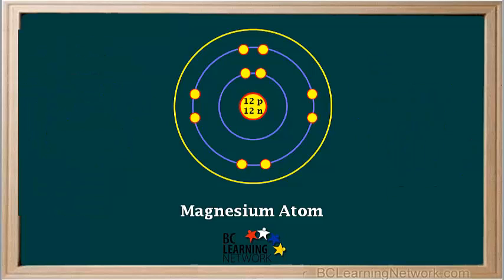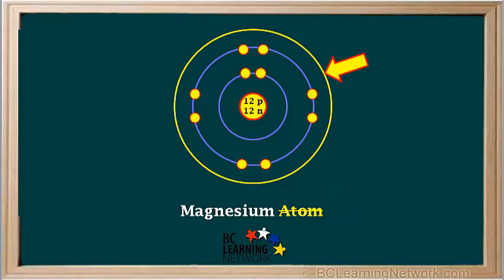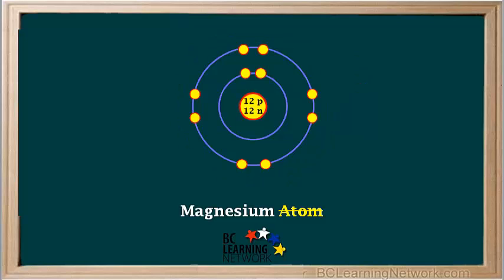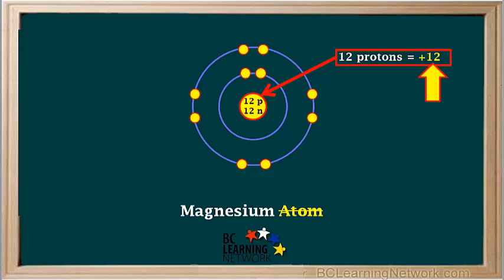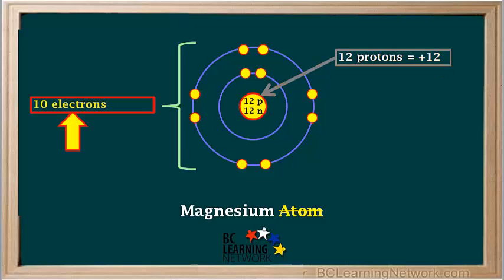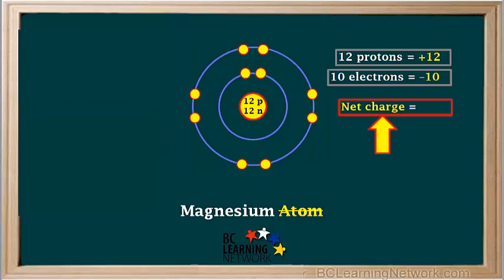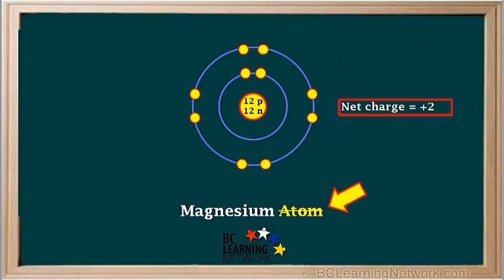Now we look at what is left of the magnesium — it can't be called an atom anymore. What used to be its valence orbital is now empty, so we can remove it from our model. It has twelve protons, which supply a positive twelve charge. Counting the electrons, you can see that it has ten, which supply a negative ten charge. So the net charge is positive twelve and negative ten, or twelve minus ten, which equals positive two. Since it has a net charge, it is not called an atom anymore — instead, it's now called an ion.